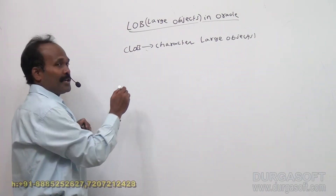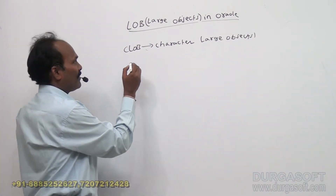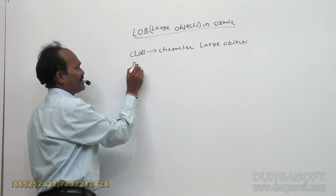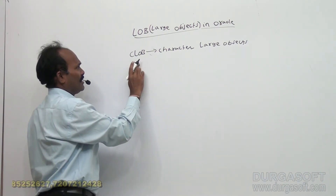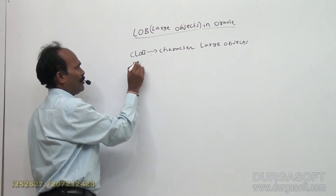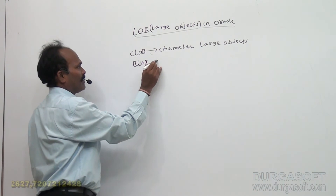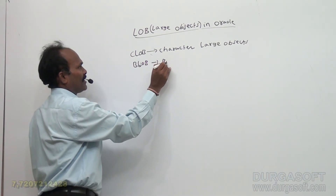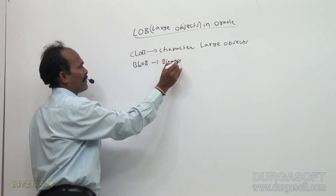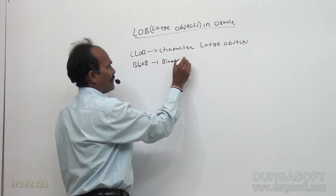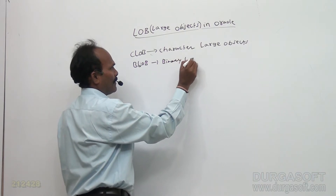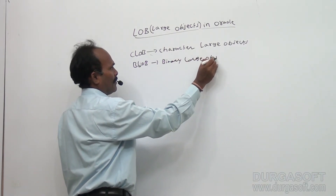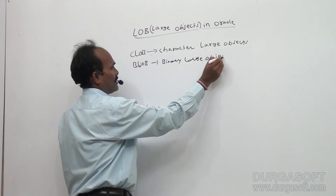Next, coming to BLOB — the next topic in LOBs is BLOB, which stands for Binary Large Objects.